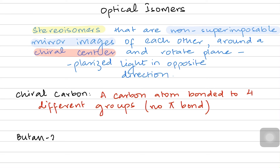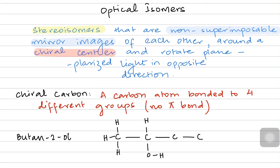For example, look at the structure of butan-2-ol. Butan-2-ol has four carbon atoms. It has an OH group on the second carbon. The other carbon atoms have their simple hydrogen atoms.